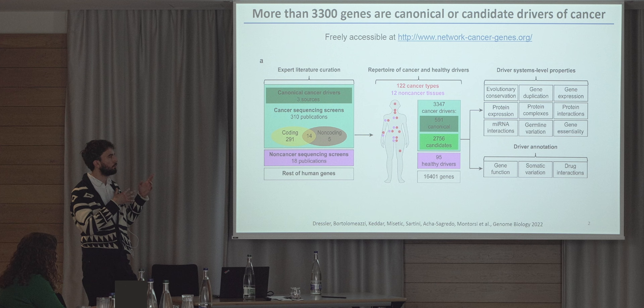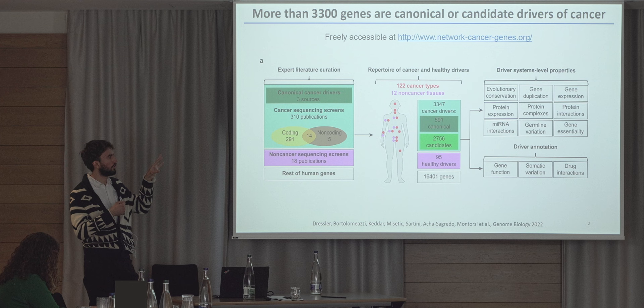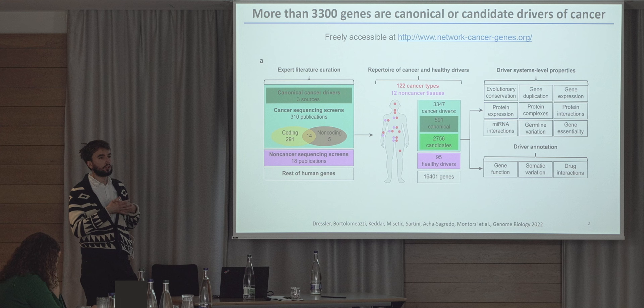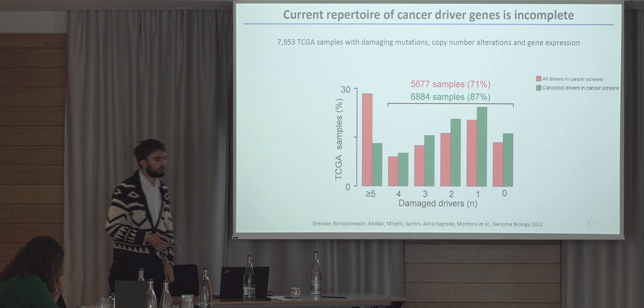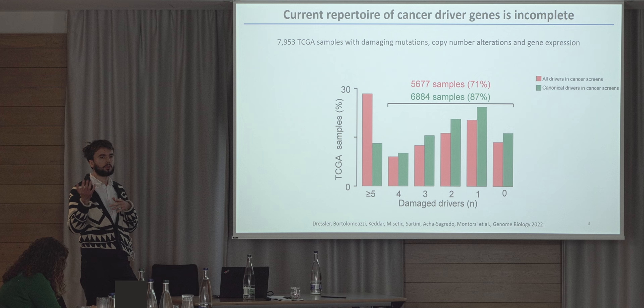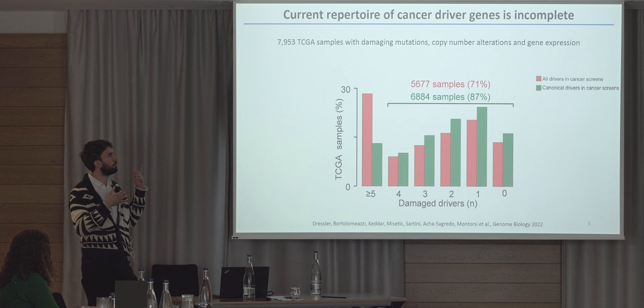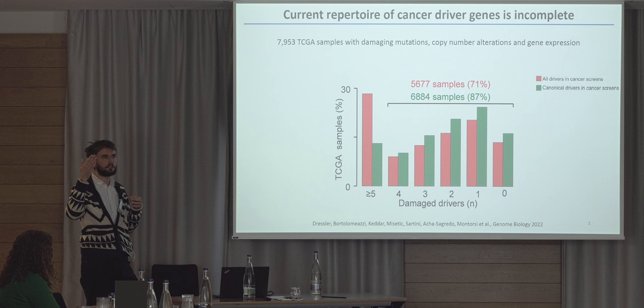When we have these two sets of cancer genes, for both of them we did different kinds of associations. First, we annotated their system-level properties, which includes different evolutionary, genomic, and expression properties. We also did gene function annotation and interaction with drugs, and we annotated the somatic alterations of these genes in TCGA samples. In our TCGA analysis, we combined samples for which we have both mutational data and copy number data, and we were interested only in genomic alterations that are damaging — those that alter the protein function. For copy number alterations, we defined them as damaging if they alter gene expression.